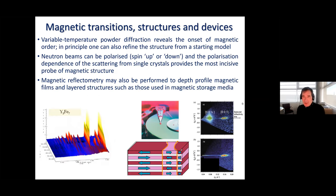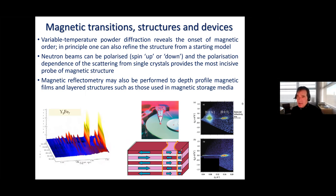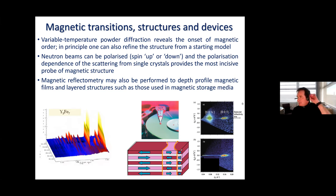One can perform detailed measurements of magnetic phase transitions. For example, by taking powder patterns as a material is cooled through a magnetic phase transition, you can determine exactly at what temperature the magnetic ordering sets in by observing new Bragg peaks related to the crystal structure appear. This technique can confirm known magnetic phases but also reveal phases that were not a priori known and provide detailed information about the ordering process, which is often important for understanding technologically important permanent magnets.